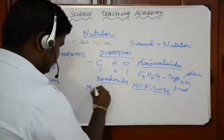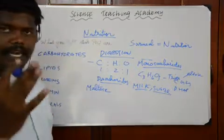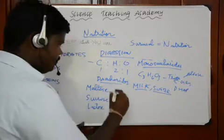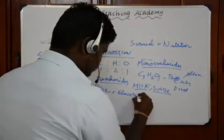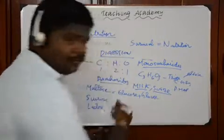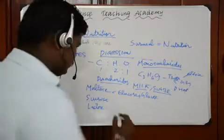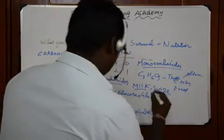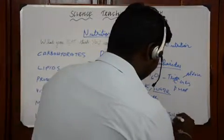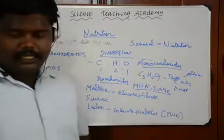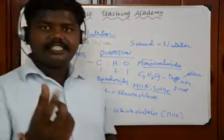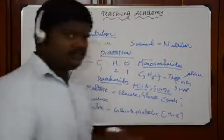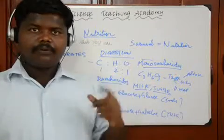Maltose is made up of glucose plus glucose. Lactose is made up of glucose plus galactose — this glucose and lactose is a major component of milk. Maltose is found in all germinating cells, particularly in seeds which we consume.